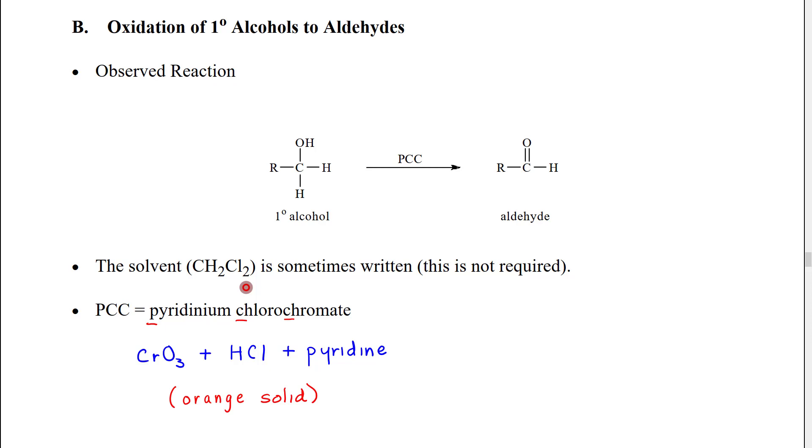Therefore you're often going to see people write PCC CH2Cl2 in the reagents by the arrow. That is not required but I'm warning you just so you don't get confused when you might see it. The CH2Cl2 is not actually a reactant it is just the solvent.